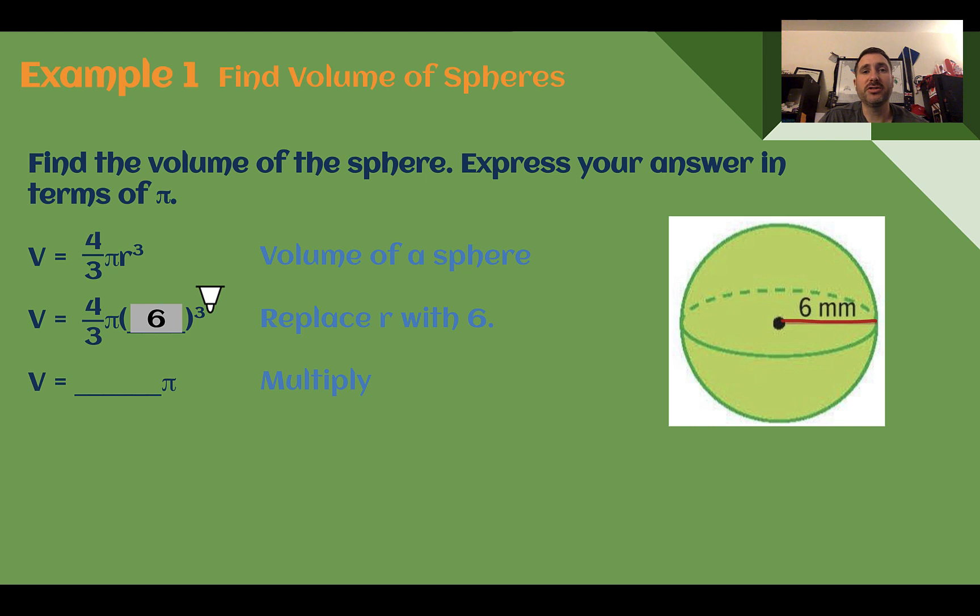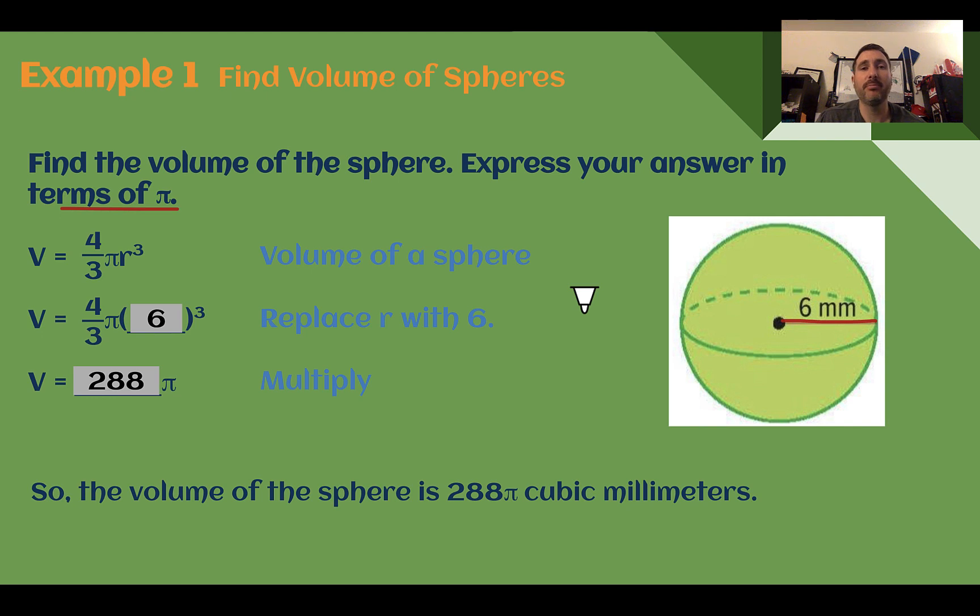6 to the third power, so 6 times 6 times 6 is 216. And then we need to multiply by 4 and divide by 3. We end up with 288. As with the other objects, we're looking to decide are we using a calculator or leaving our pi symbol. We're doing in terms of pi, so we can leave it. This has a volume of 288 pi cubic millimeters.